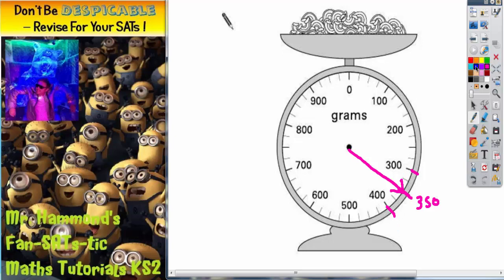The other way you could think about this would be to actually work out what each of these mini gaps is. Well, between 0 and 100, that is a big gap of 100. But then between that big gap we've got four mini gaps.